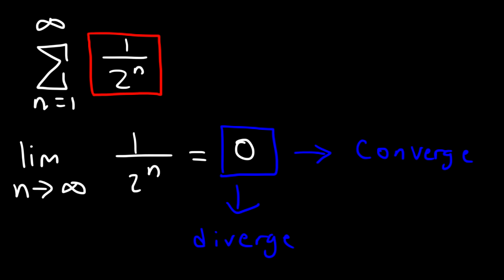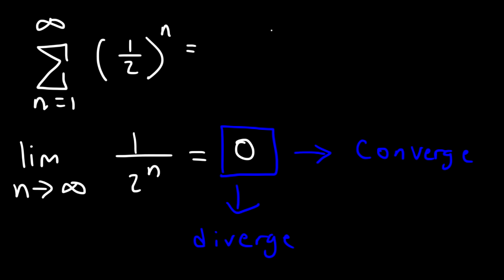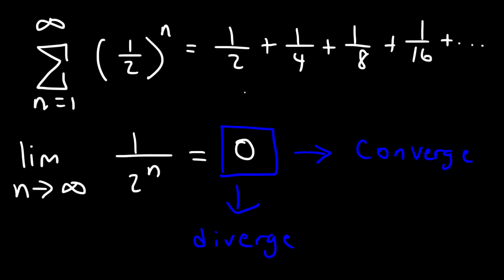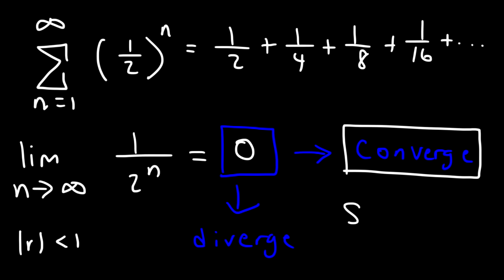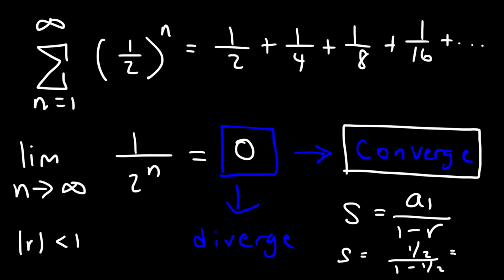This is a geometric series. We can write it as 1 over 2 raised to the n. When n is 1 the first term is 1/2, then 1/4, then 1/8, 1/16, and so forth. For a geometric series, if the common ratio — which is 1/2 — has an absolute value less than 1, then by definition the geometric series will converge. The sum equals the first term divided by 1 minus r. The first term is 1/2 and r is 1/2, so 1/2 divided by 1/2 equals 1. The sum of this infinite geometric series equals 1.